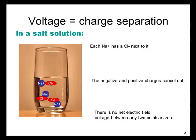Let's start with basic physics. Voltage is charge separation — they're effectively the same thing. In a solution of salt water, each sodium ion has a chloride ion next to it. The negative and positive charges cancel out. There is no net electric field. The voltage between any two points is zero. The voltage throughout the salt water remains at zero because any charge separation that happens in solution is immediately eliminated.